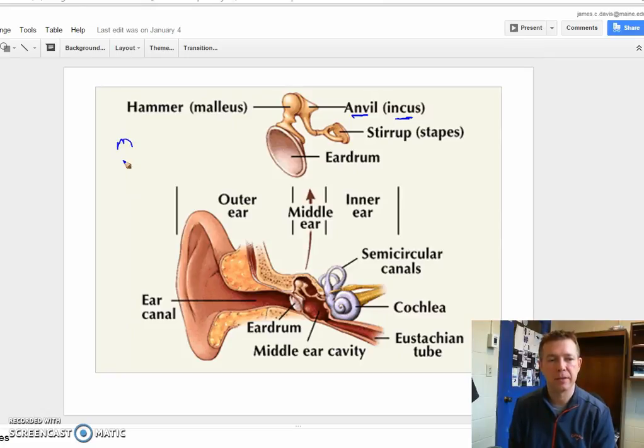And then our third one is the stapes. The third one is the stapes, also known as the stirrup. And this one looks just like a stirrup for a horse's saddle. So you can see where you would be putting your foot within that stirrup there.